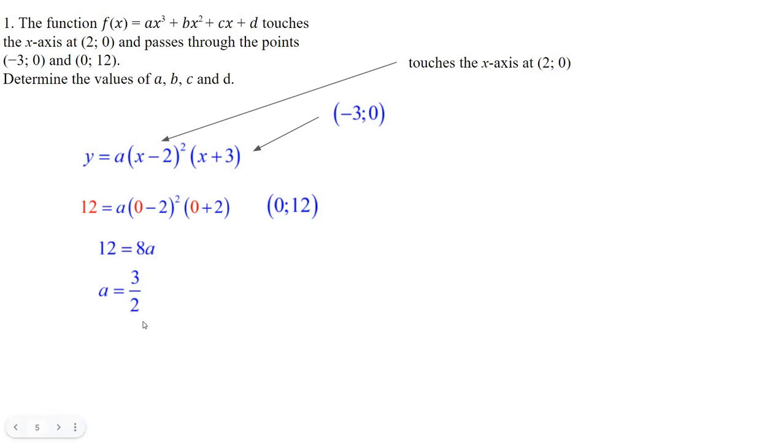Well, now we've got a. All we do is take that 3 halves and put it back in there and multiply it out. And that's what we do. x minus 2 squared is x squared minus 4x plus 4. You're going to get x cubed. You're going to get 12.